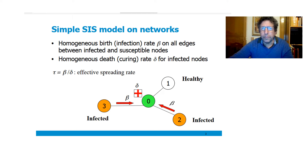I now present our simplest model for virus propagation in a network. It is called the SIS model because there are two states in which each node can be: S is susceptible or healthy, and I is infected.